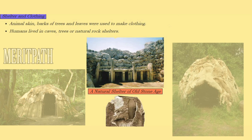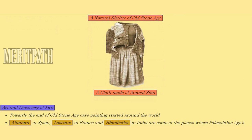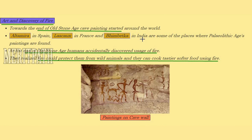During the Old Stone Age, shelter and clothing consisted of animal skins, bark of trees, and leaves. People lived in caves, trees, or natural rock shelters. This is a natural rock structure from the Old Stone Age, and this is clothing made from animal skin and fur. Towards the end of the Old Stone Age, art developed and fire was discovered.